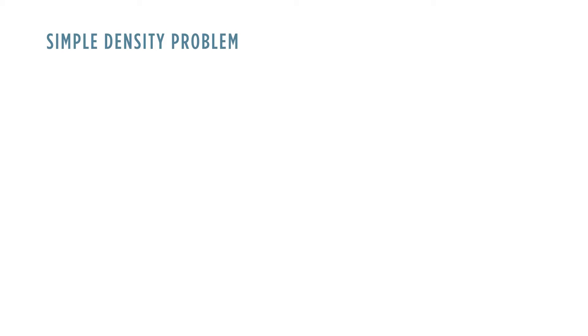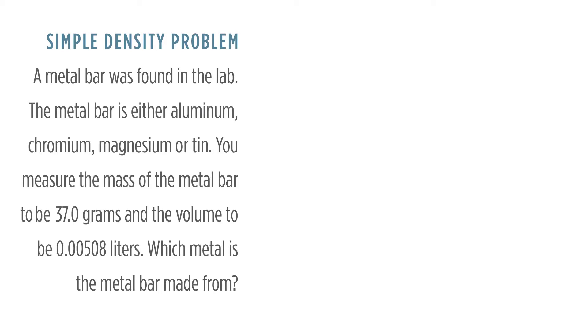If we look at a simple density problem, a metal bar was found in the lab. The metal bar is either aluminum, chromium, magnesium, or tin. You measure the mass of the metal bar to be 37.0 grams and the volume to be 0.00508 liters. Which metal is the metal bar made from?